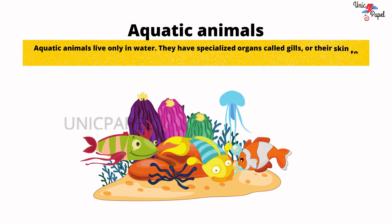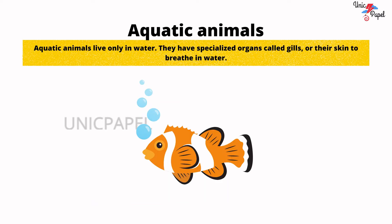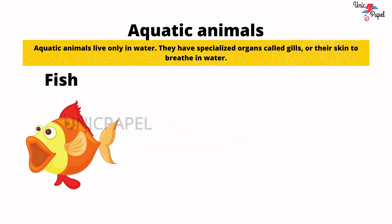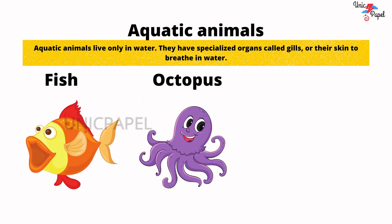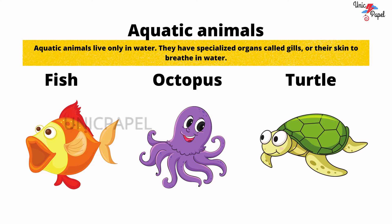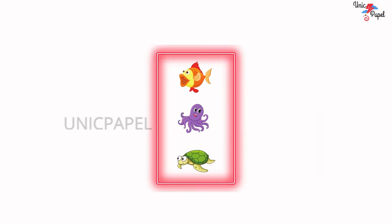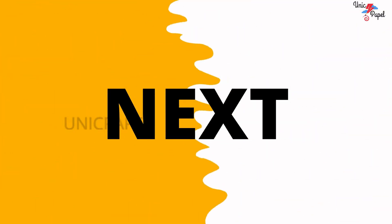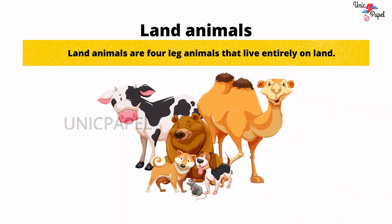Aquatic animals. Aquatic animals live only in water. They have specialized organs called gills, or use their skin to breathe in water. Example: fish, octopus, turtle, and many more. What do we call the animals that can live only in water? Aquatic animals. Well done. Next.